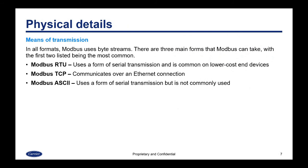In all formats, Modbus uses byte streams. There are three main forms that Modbus can take, with the first two being the most common. The first is Modbus RTU, which uses a form of serial transmission and is common on lower-cost end devices. The second is Modbus TCP, which communicates over an ethernet connection. There is also Modbus ASCII, which uses a form of serial transmission but is not commonly used.